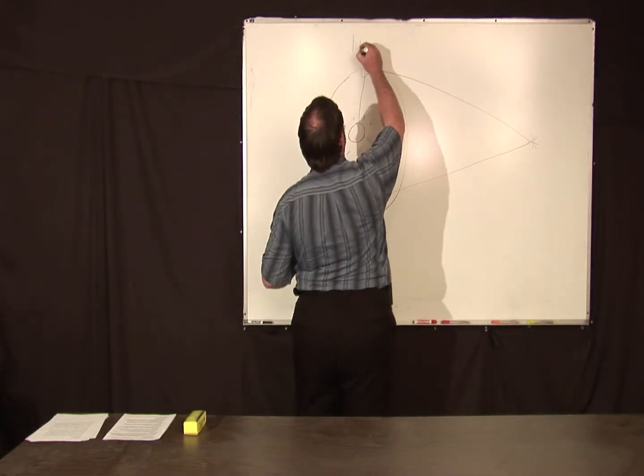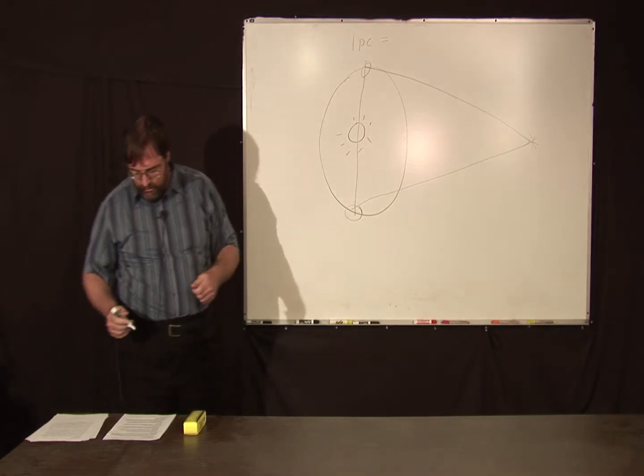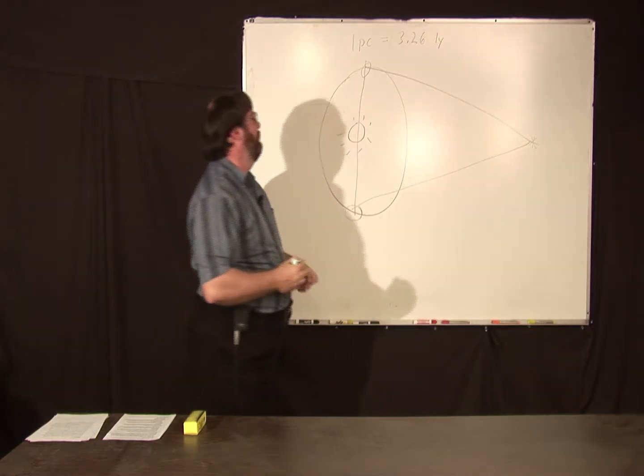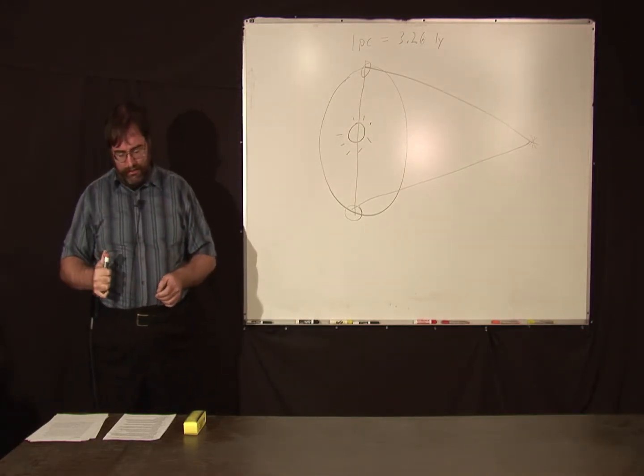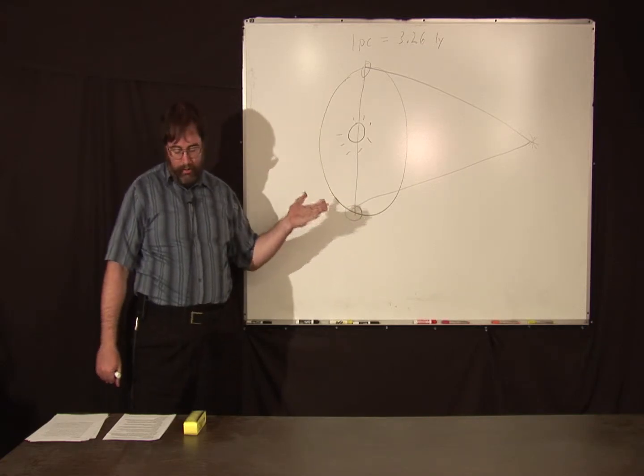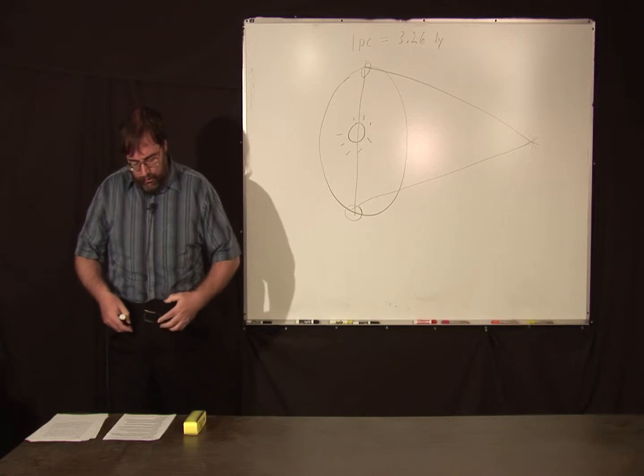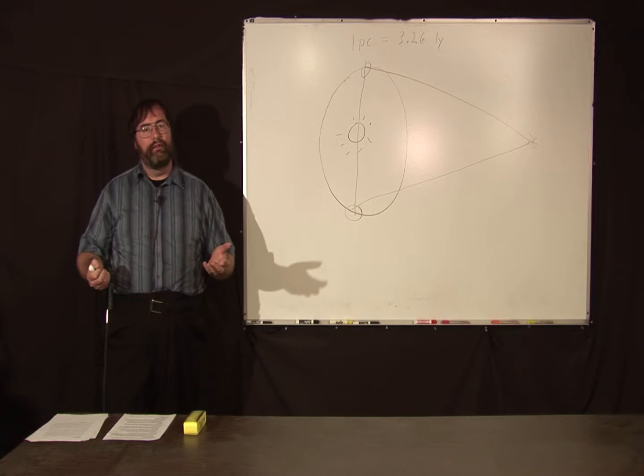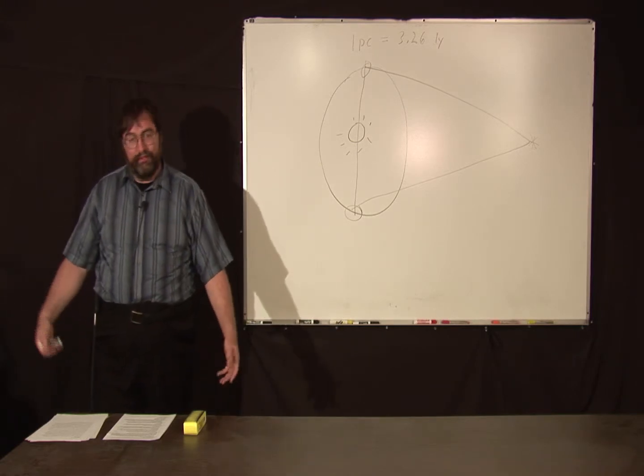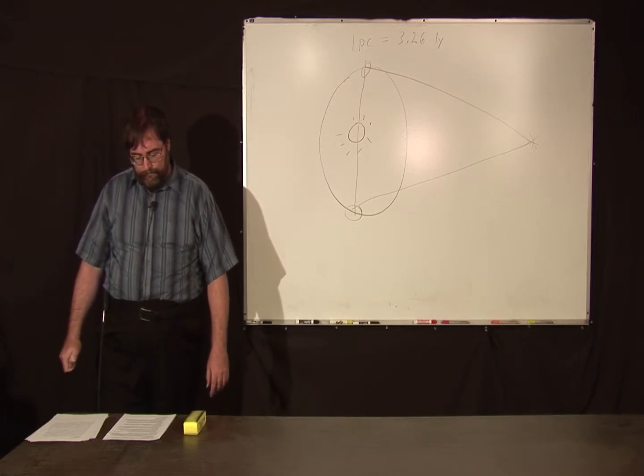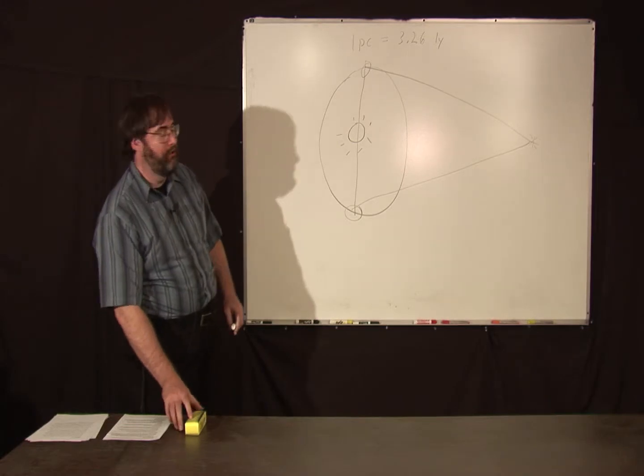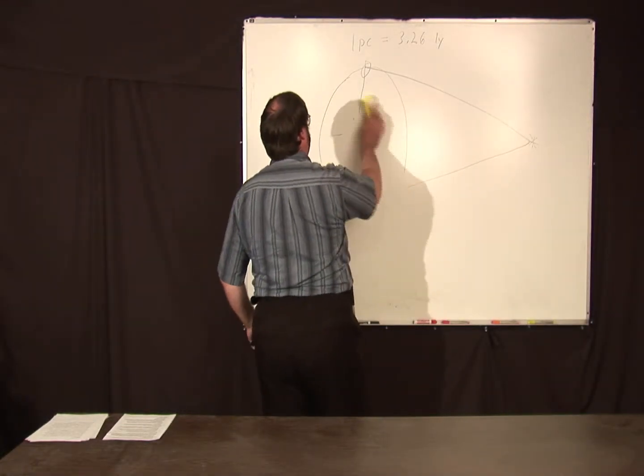One parsec equals 3.26 light years. In other words, it takes 3.26 years for light to travel one parsec. Because of the angular accuracy achievable from the ground for parallax measurements, which is about .02 arc seconds, the limit that this type of measurement is about 50 parsecs. There's a lot of stars in 50 parsecs, or 163 light years.